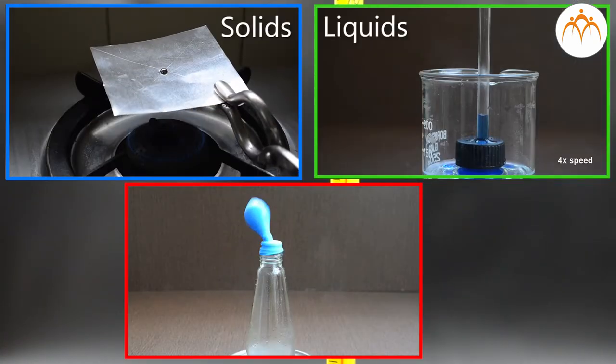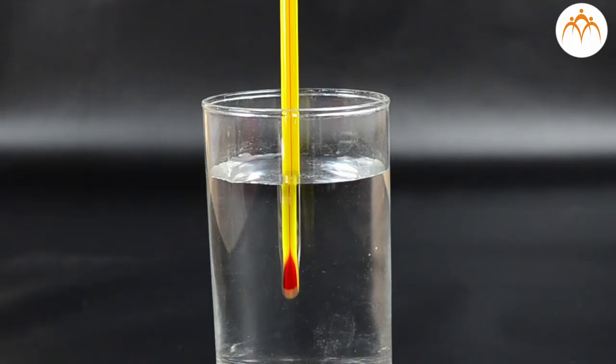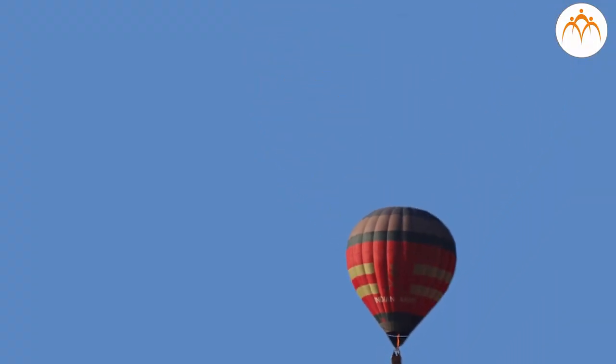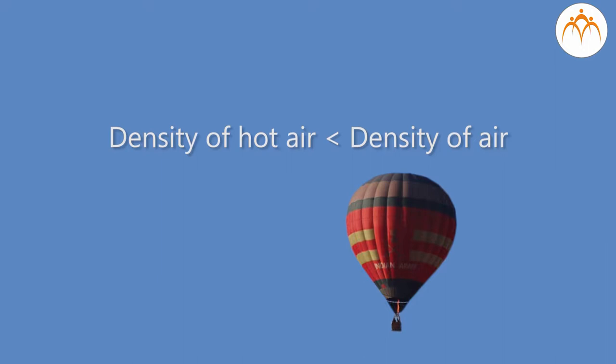We discussed about the thermal expansion of solids, liquids and gases. Alcohol expands in thermometer and rises up. Hot air volume increases when heated. This causes its density to be smaller than the surrounding air. This results in hot air rising upward.